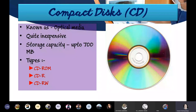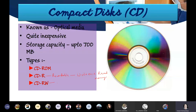The second type is CD Recordable - you purchase a blank CD from the market, write your own data, and then use it. That is write-once, read-many: you can write once and read multiple times. The third type is CD Rewritable - it is a bit more costly than CD Recordable, but you can write it multiple times. You can even delete the previous contents and rewrite new values.